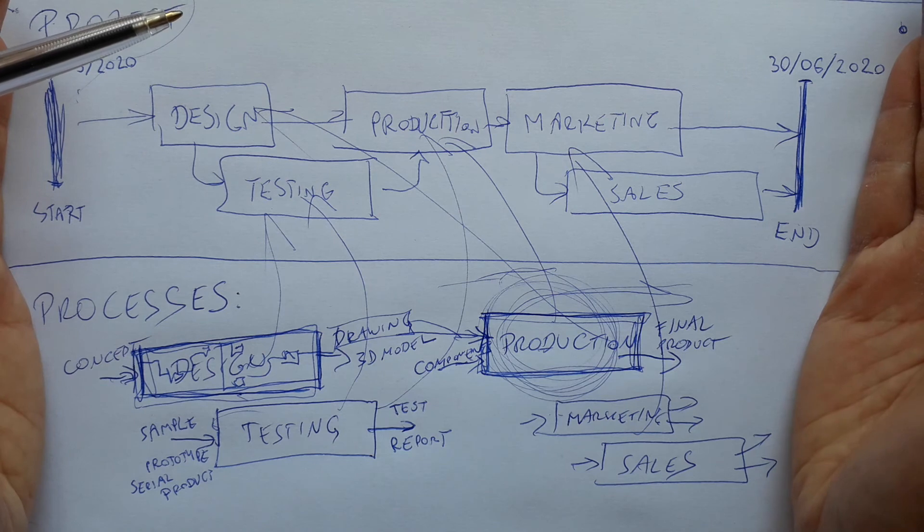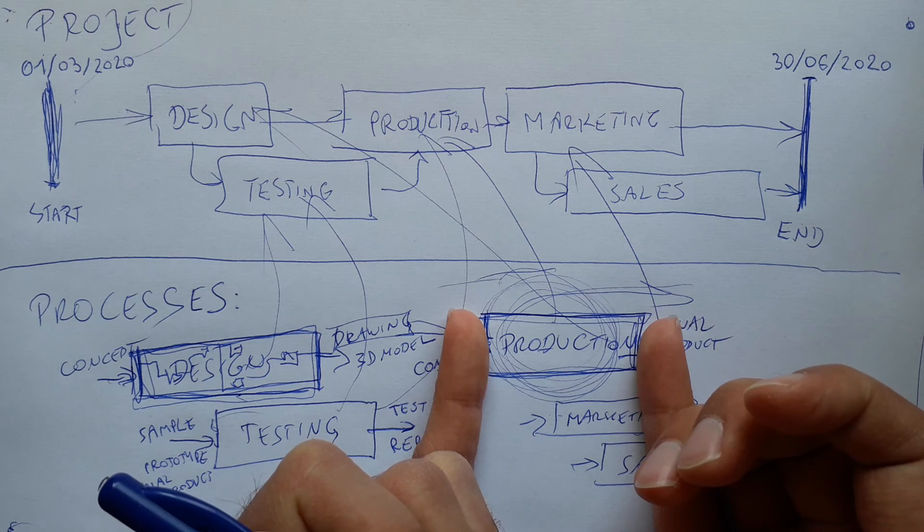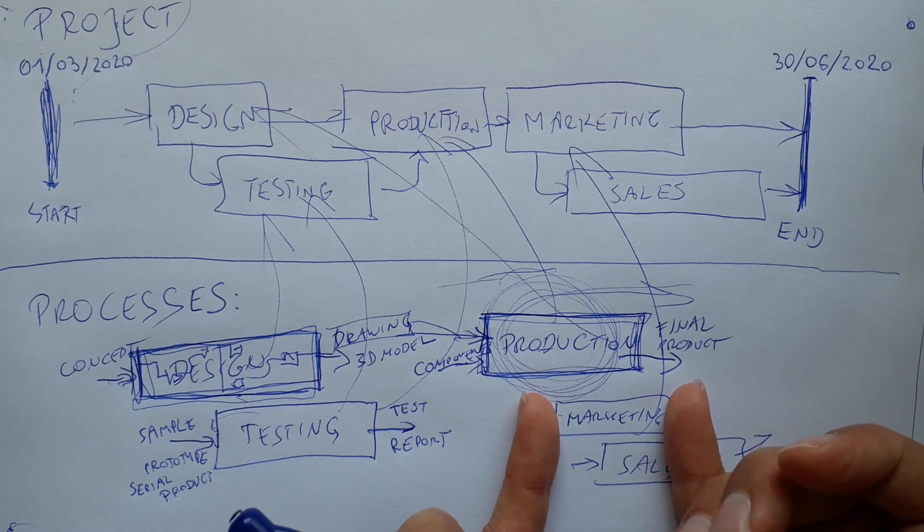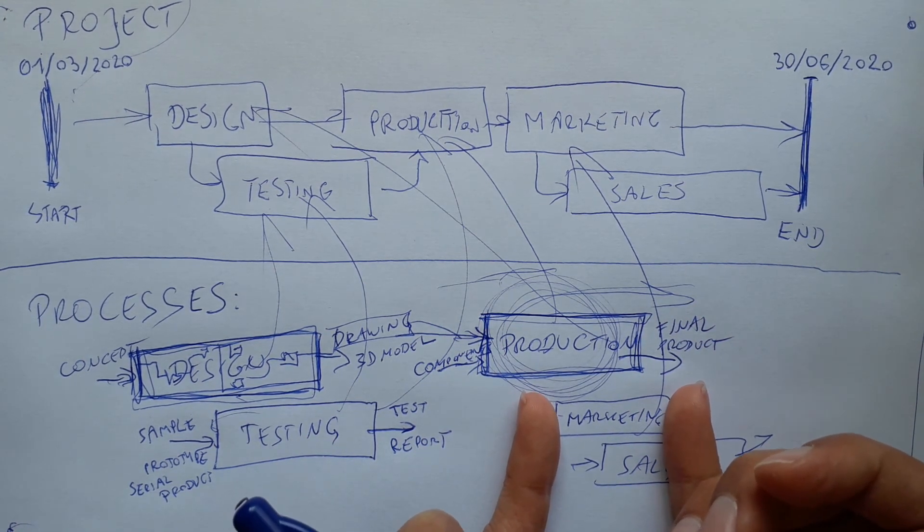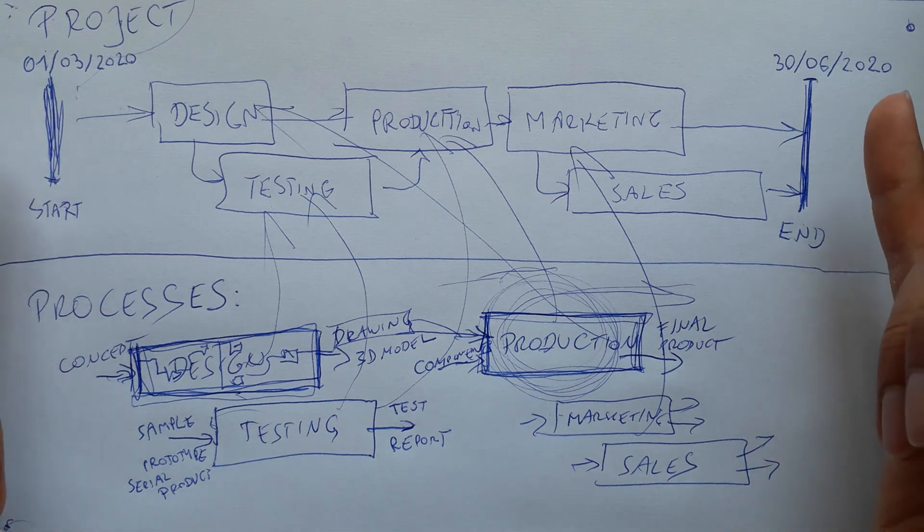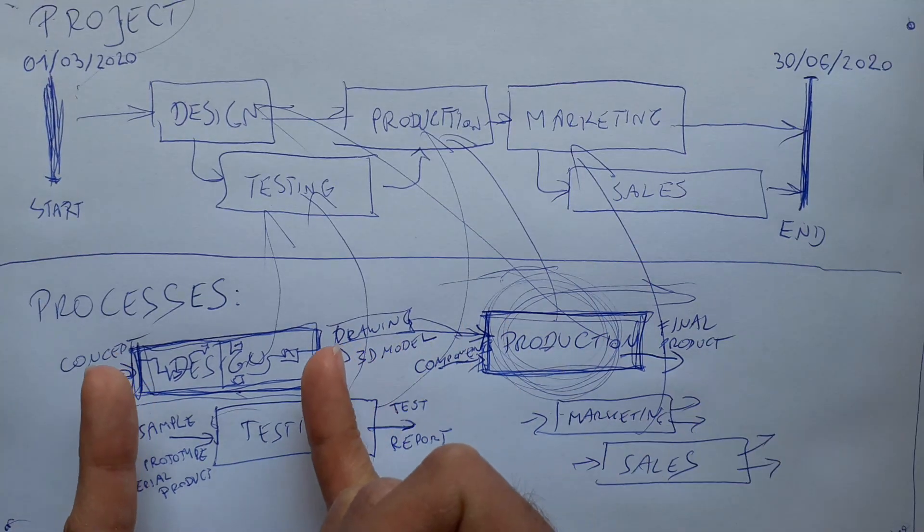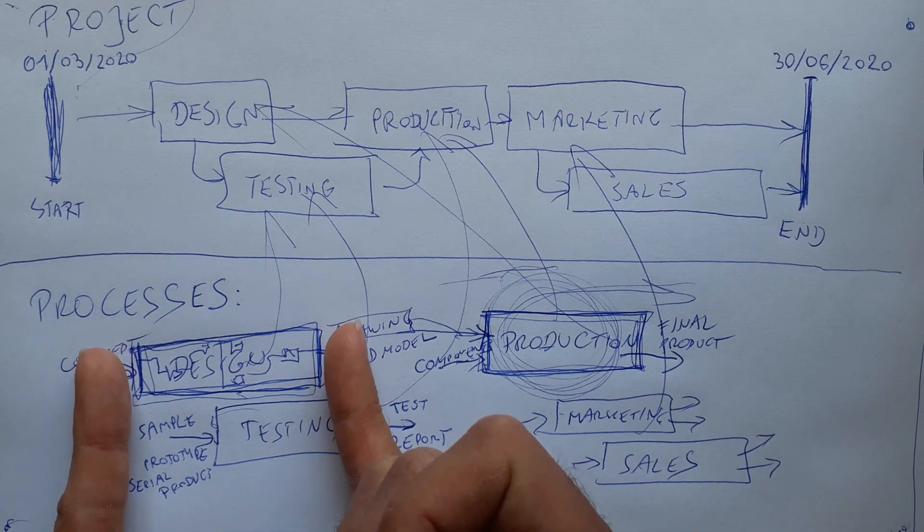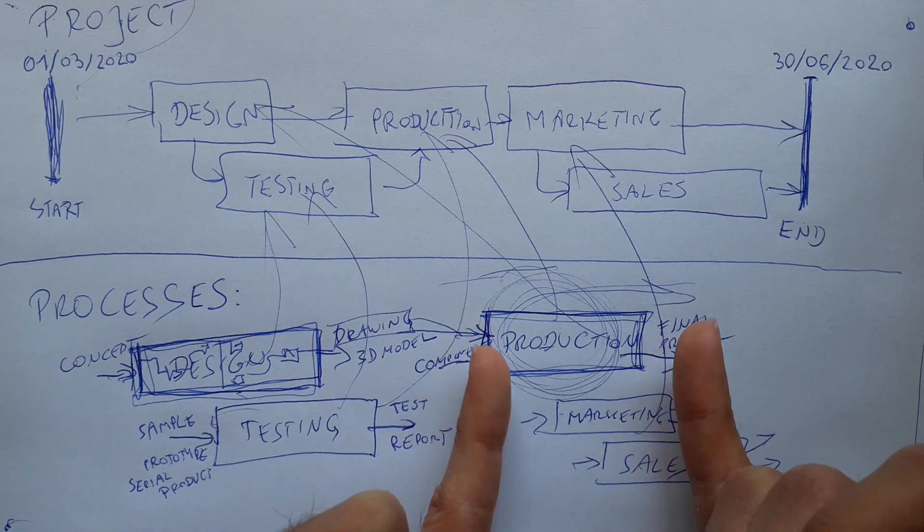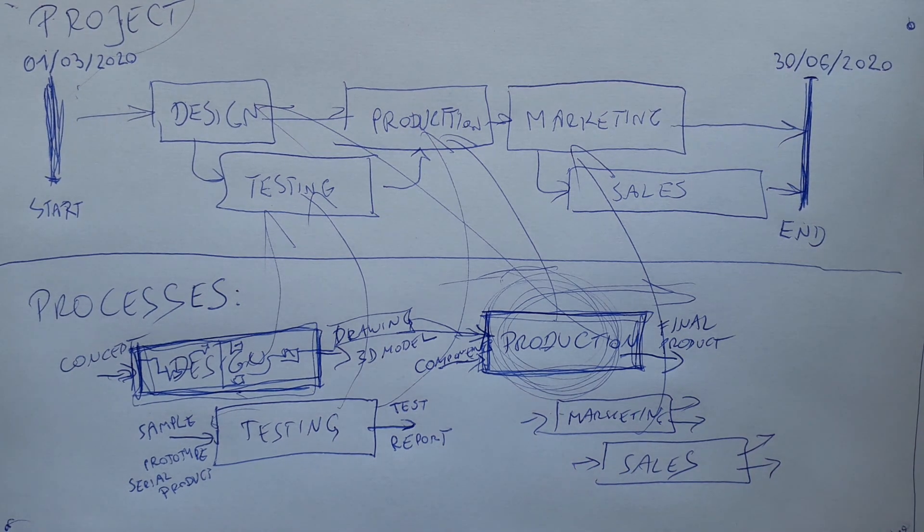Whereas a process is a set of activities to achieve a goal thousands of times, millions of times. So this is the difference between a process and a project. A project is a set of activities in a limited time with limited resources, with a limited team. A process is just defined as a set of activities with input and output, and that's it. See you next time.